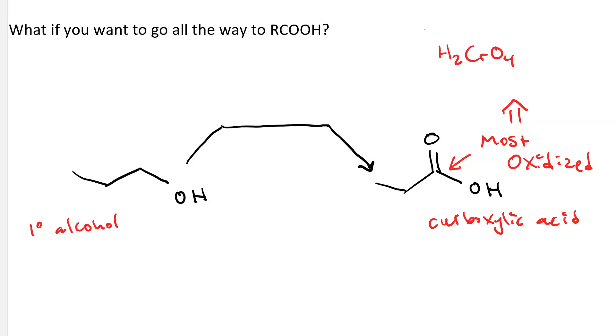Now, we generate that in situ. And there are two easy ways to generate Jones reagent in solution. One is chromium trioxide, acid, and acetone. This is the condensed formula for the condensed structure for acetone. And the other way to generate Jones reagent is with sodium dichromate, Na2Cr2O7, sulfuric acid, and water.